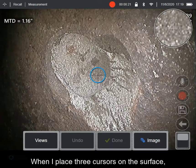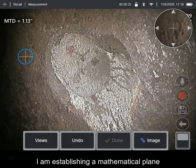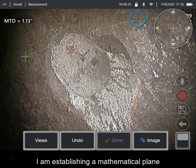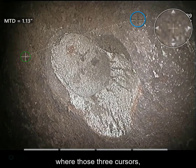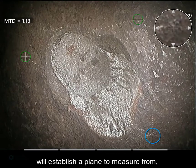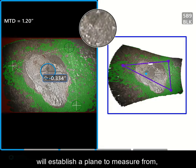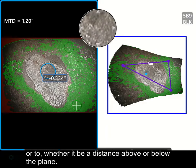When I place three cursors on the surface, I'm establishing a mathematical plane where those three cursors will establish a plane to measure from or to, whether it be a distance above or below the plane.